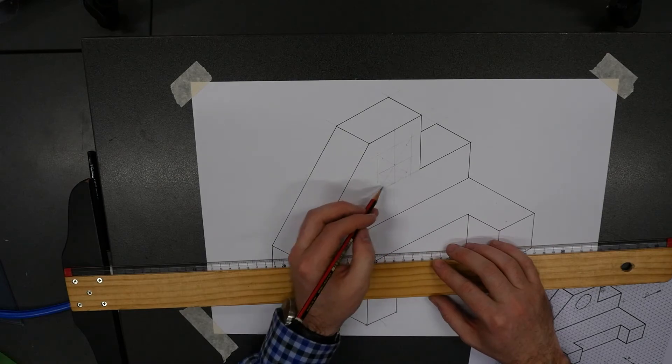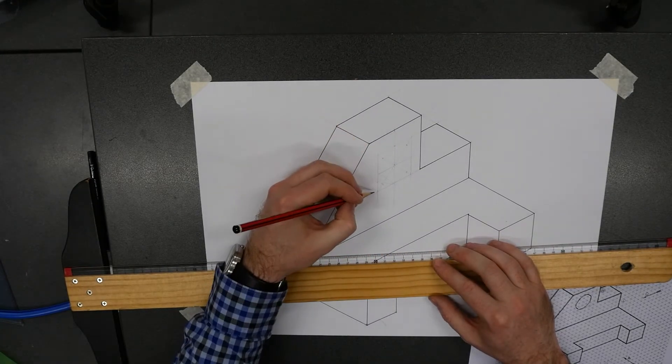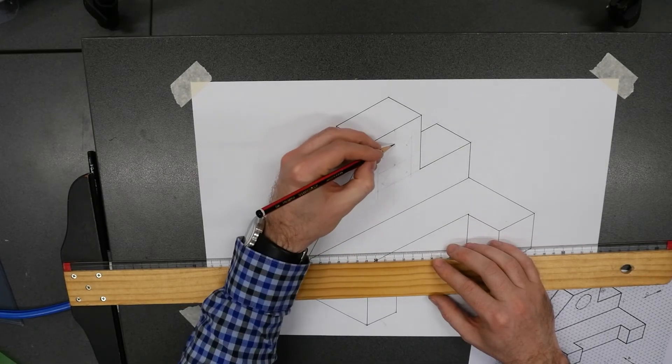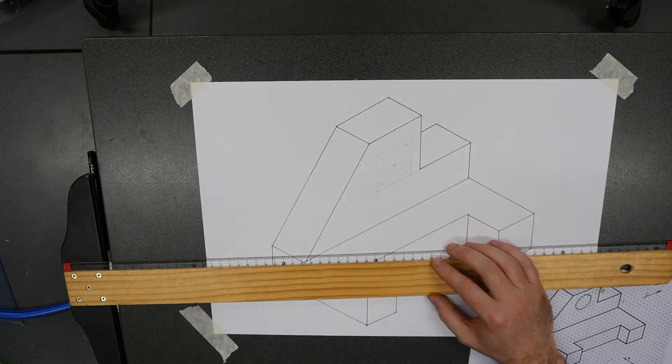So just going over what I've done, I've worked out where the location of the ellipse needs to be, and then done the diagonals to work out where the center point is, and also located the center points on all the length and the width.